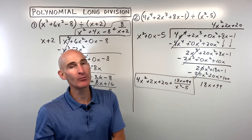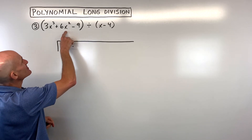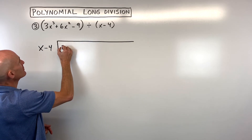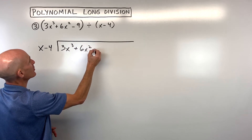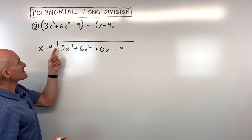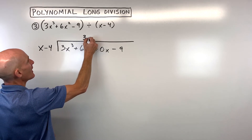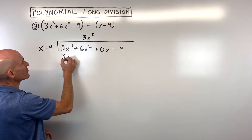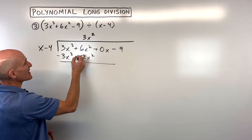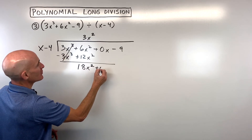Let's take a look at one more example — see if you can practice this one on your own. Pause the video and try it, then we'll go through it together. This is being divided by x minus 4, so x minus 4 goes in front. It's going into 3x cubed plus 6x squared plus 0x minus 9 — there's a missing term so we add a placeholder. What times x equals 3x cubed? That's 3x squared. When I distribute, I get 3x cubed minus 12x squared. Change the signs and add — the first terms cancel — and we get 18x squared plus 0x minus 9.